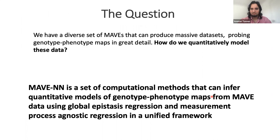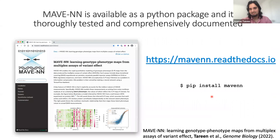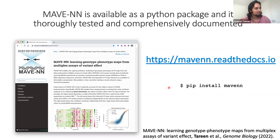The question I'd like to address today is: given a diverse set of MAVEs that produce large datasets probing genotype-phenotype maps in great detail, how do we quantitatively model these data? My answer is MAVE-NN — a set of computational methods that infer quantitative models of genotype-phenotype maps from MAVE data using global epistasis regression and measurement process agnostic regression. MAVE-NN exists as a software package with tutorials, demos, documentation, tests, and a webpage listing all equations used. All you have to do is pip install MAVE-NN and you're ready to go.